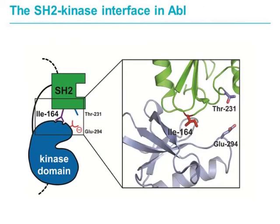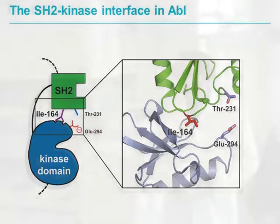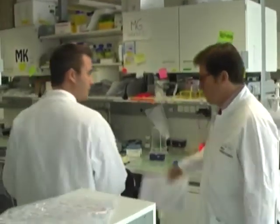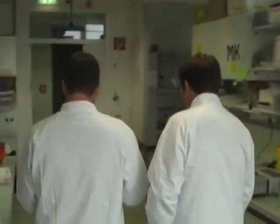The SH2 domain is particularly important because we know it may exert a negative function in regulation, but we also hypothesize that it actually has a positive role in activation. In the crystal structure of C-ABL, we can see the SH2 domain binds on top of the catalytic domain, and particularly isoleucine 164 protrudes and engages the catalytic domain. If you mutate that isoleucine, you actually lose catalytic activity, as if it has an allosteric positive effect on the output of the kinase.